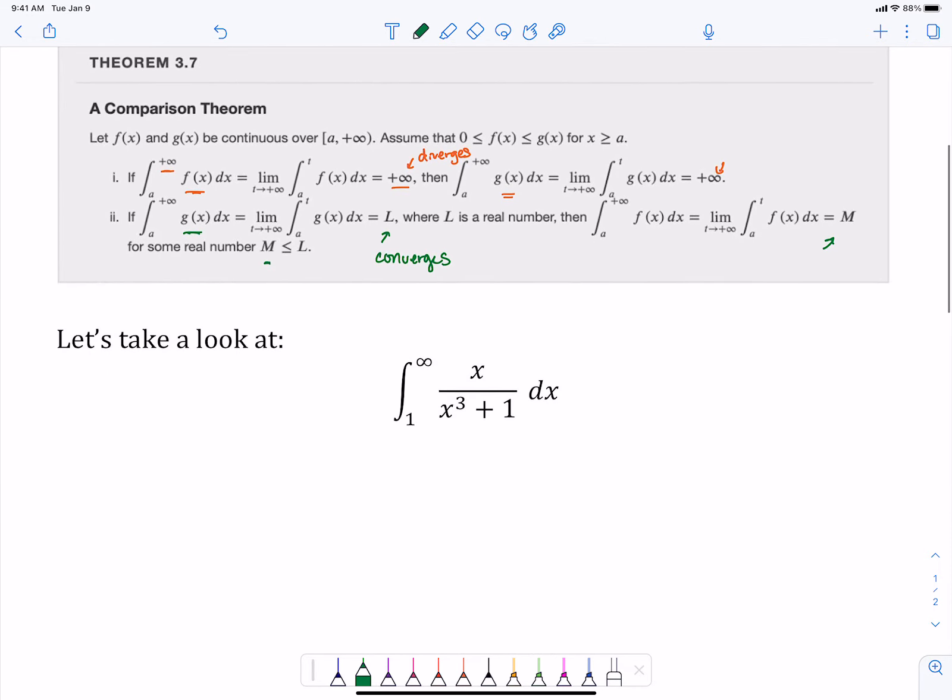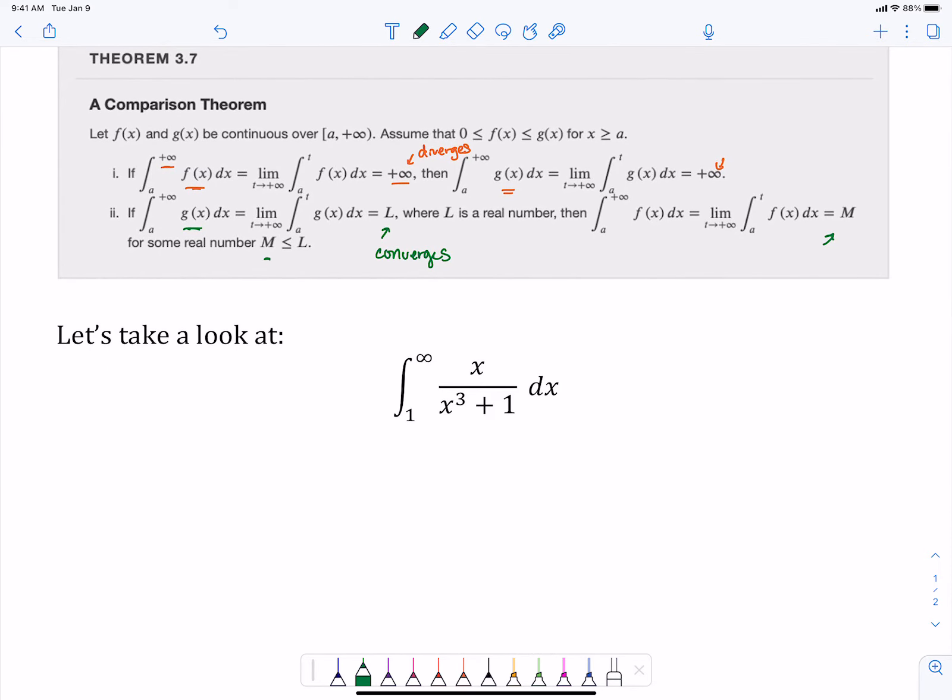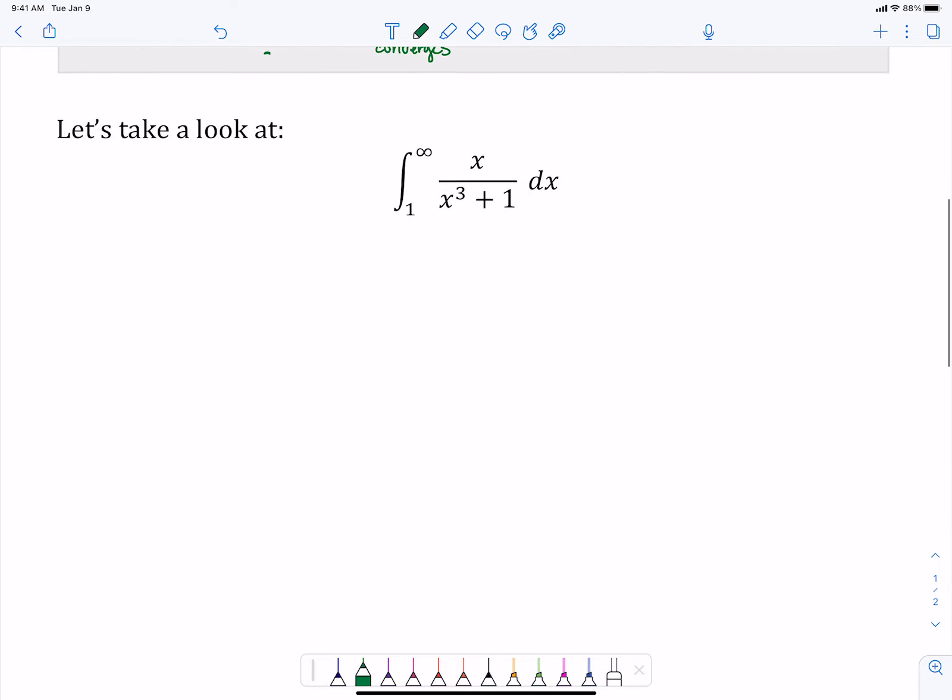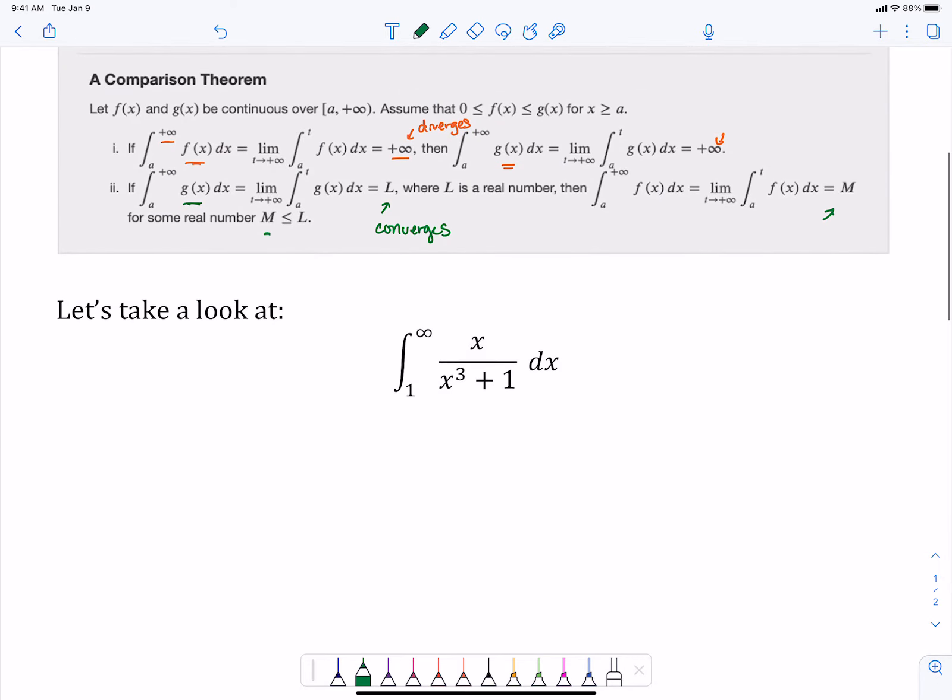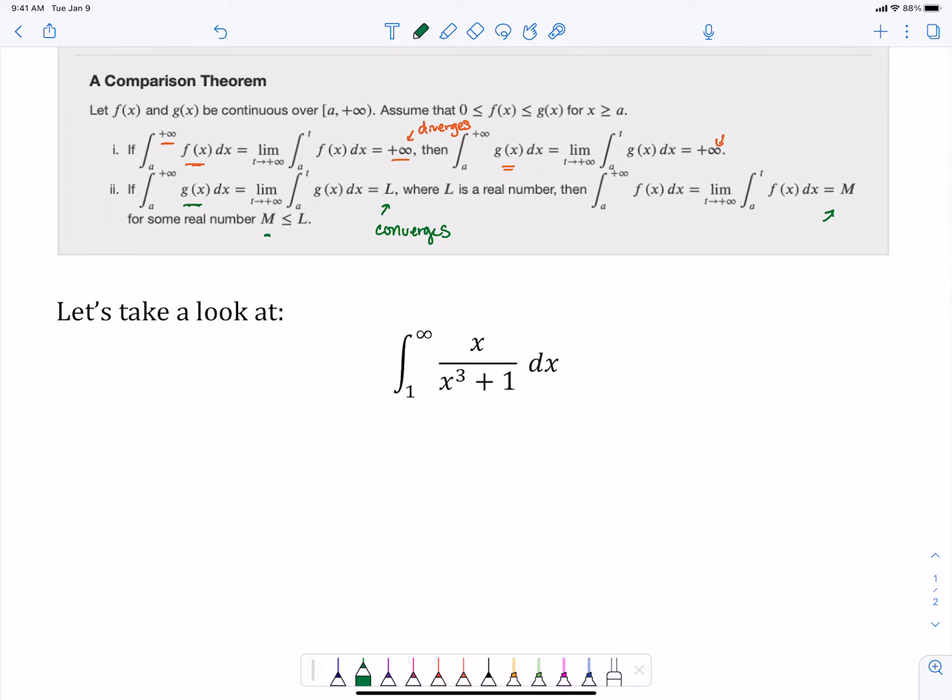So how we might use this is, let's take a look at a function like x over x cubed plus one, going from one to infinity. x over x cubed plus one is less than or equal to x over x cubed. We have to think about this for a second of why this would be true.